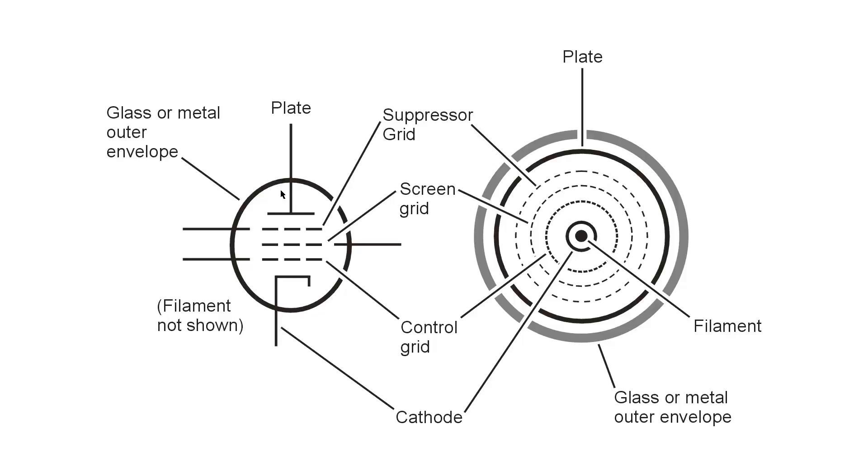The filament is typically not shown in the schematic symbol for a vacuum tube because it would be too complicated in the diagram, it would just make it too messy. Although if it is a directly heated cathode, that means the filament actually is the cathode, then you show only the filament.